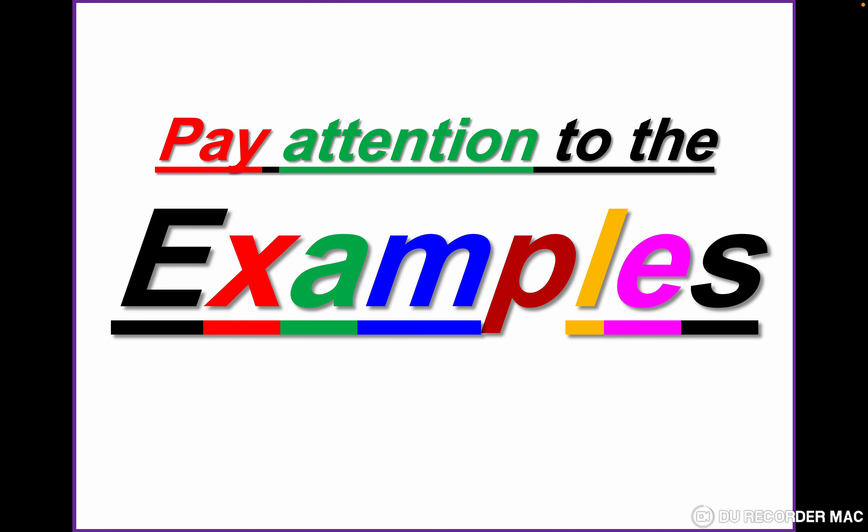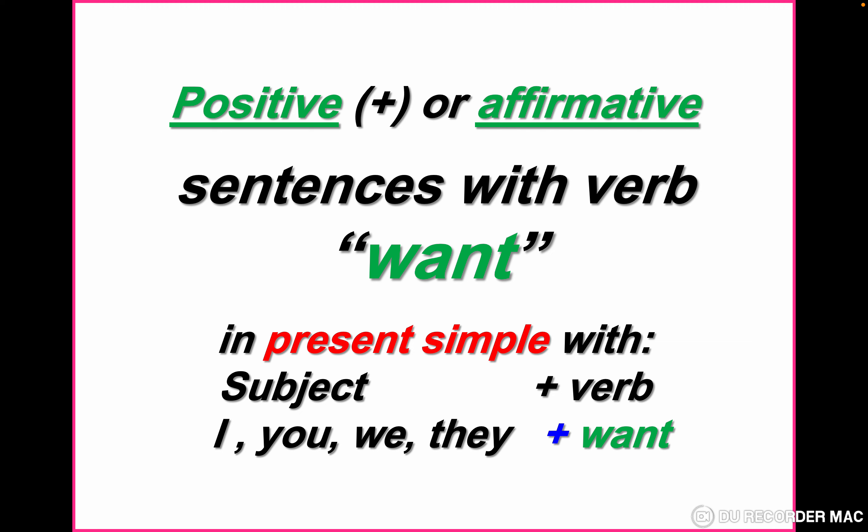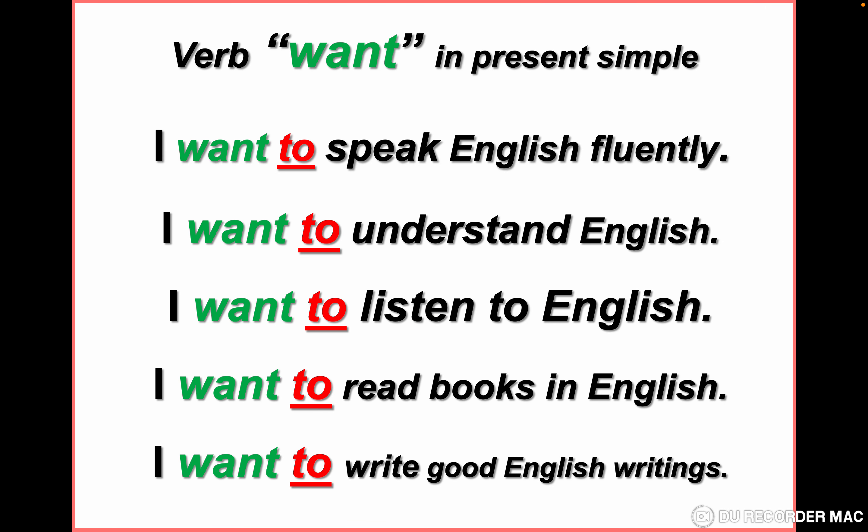Now let's see real examples of the positive form. Remember: the verb that comes after 'want' starts with 'to'. I want to speak English fluently. I want to understand English. I want to listen to English. I want to read books in English. I want to write good English writings.